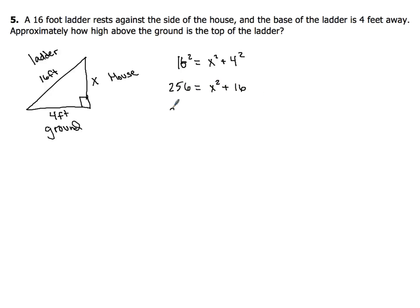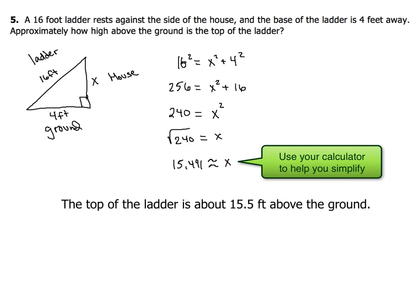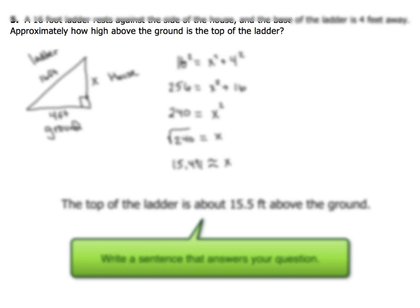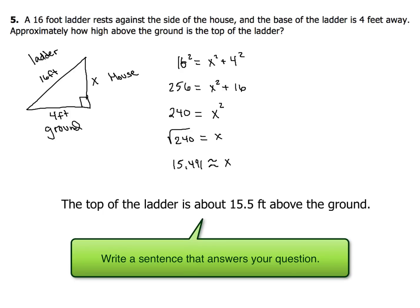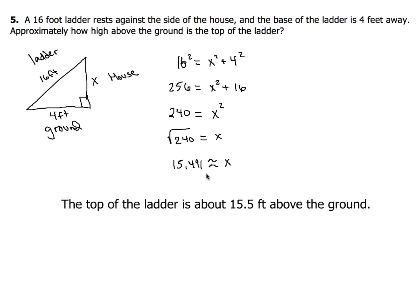Now when I subtract 16, I end up with 240. So I get that for my value of x squared. So after you get done square rooting 240, you end up with about 15.491 for x. So we got to answer the question using a complete sentence. There it is. The top of the ladder is about 15.5 feet above the ground. We're done with this one. We only got one more example to do. Let's check out this example six.